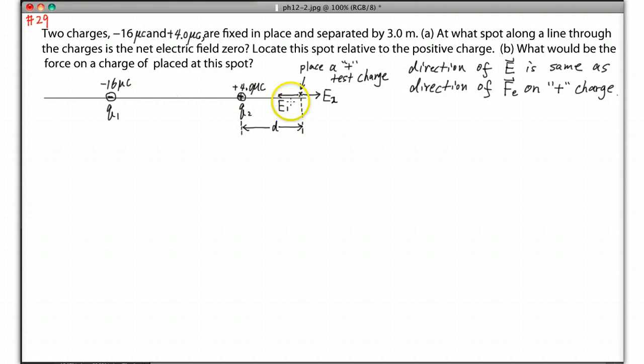If this is D, we can calculate E1 and E2. So E1 should equal K|Q1| over, now because there's 3 meters between them, 3.0 meters, the distance from Q1 to this spot is going to be 3 plus D, don't forget the squared.